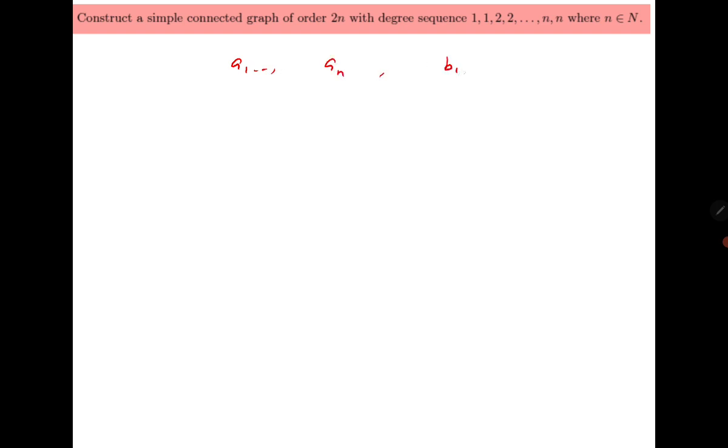The last question says: construct a simple connected graph of order 2n with the given degree sequence. When it says construct, you need to provide steps that work for any n, not just a particular value. One way is to consider a graph with vertices a1, a2, ..., an and b1, b2, ..., bn.